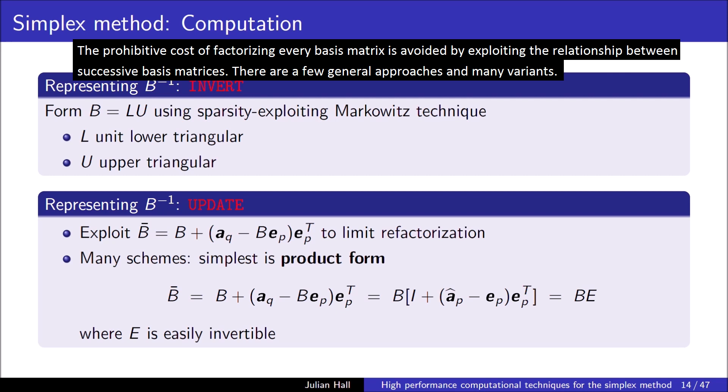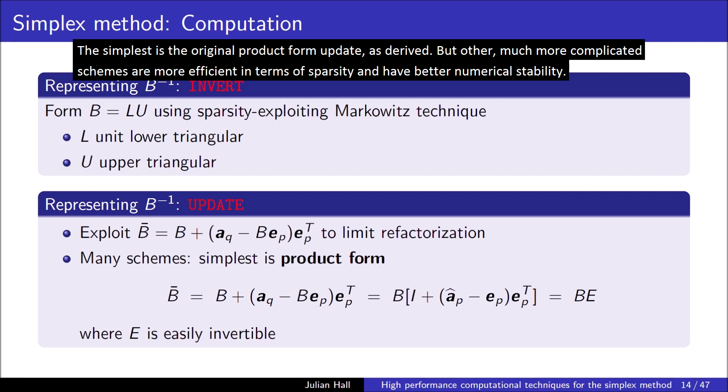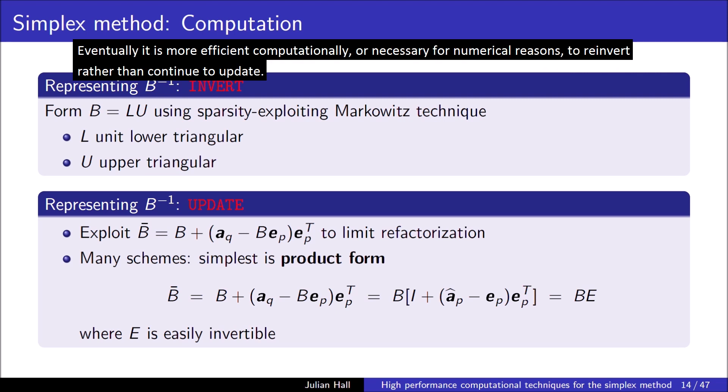Representing the inverse of the basis matrix requires a factorization technique to obtain an LU decomposition with, ideally, no more non-zero entries than the original matrix. The prohibitive cost of factorizing every basis matrix is avoided by exploiting the relationship between successive basis matrices. There are a few general approaches and many variants. The simplest is the original product form update, but other, more complicated schemes are more efficient in terms of sparsity and have better numerical stability. Eventually, it is more efficient computationally, or necessary for numerical reasons, to re-invert rather than continue to update.